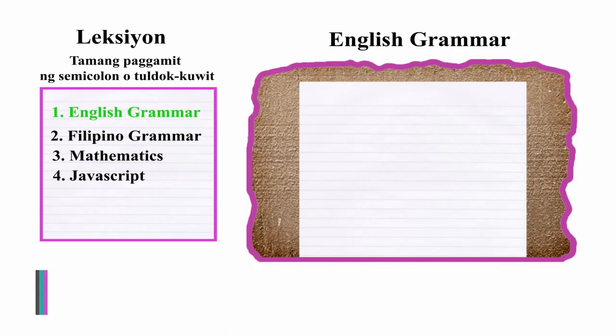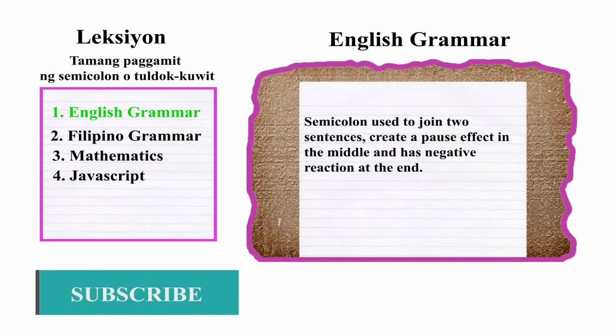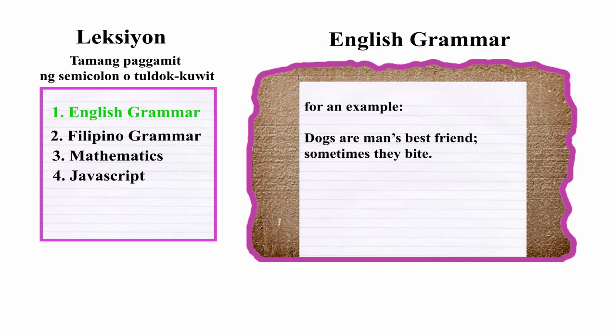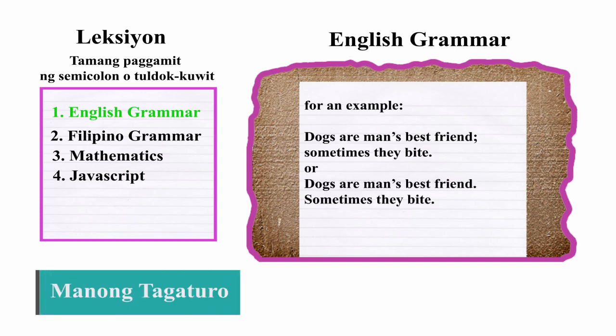First we will talk about the rules of using semicolon in English grammar. It can be used to join two sentences and create a pause effect in the middle. For example: 'Dogs are man's best friend; sometimes they bite.' Or we can still write them in two separate sentences: 'Dogs are man's best friend. Sometimes they bite.'